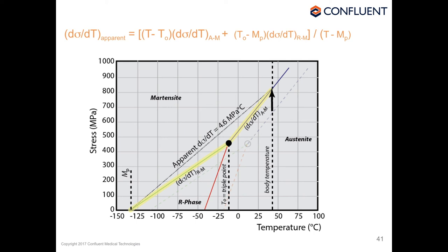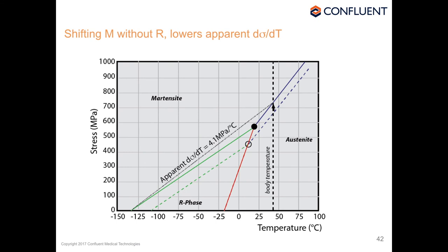Alternatively, if only the martensite start temperature is moved down while leaving the R phase formation temperature unchanged, the triple point actually moves up in temperature. The lever arm changes, and d-sigma-dT becomes 4.1 instead of 4.6 MPa/°C. So where the R phase sits controls the triple point, and that controls the observable d-sigma-dT. This point is often ignored.